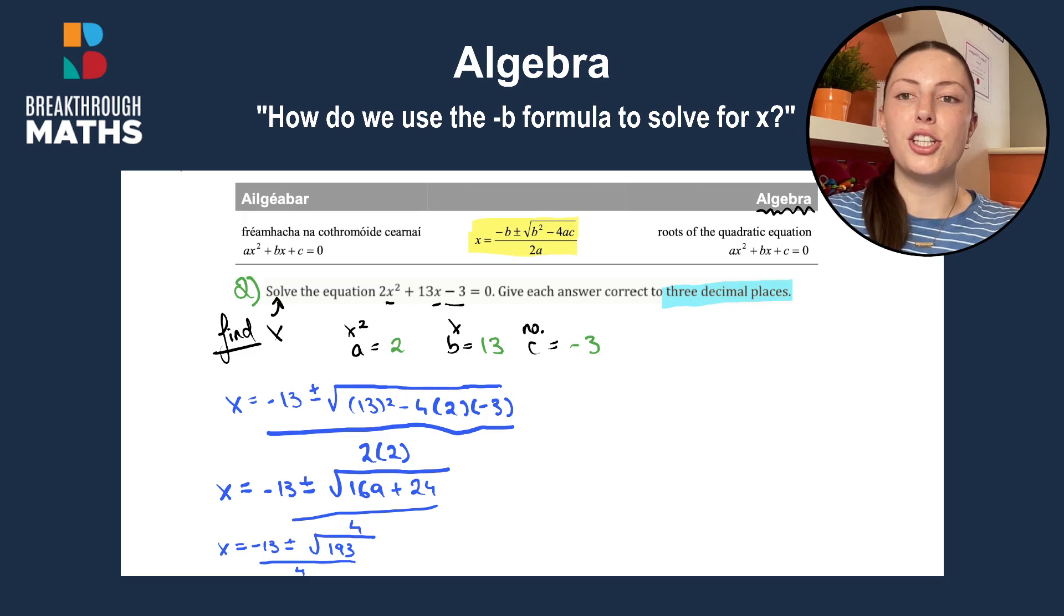Now we break it into two different options. So because it has a plus or minus, that means we're going to get two different answers for x. That's where we see that here. It can be plus or minus the square root of 193. So now we'll show that with those two options.